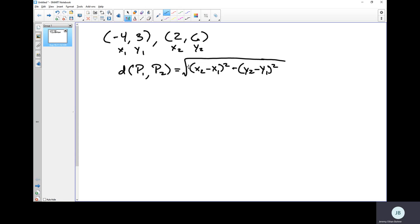All right, so now we can plug that information into our formula. That gives us the square root of: x2 is 2 minus x1 is -4, squared, plus y2 is 6 minus y1 is 3, squared.